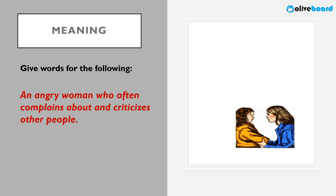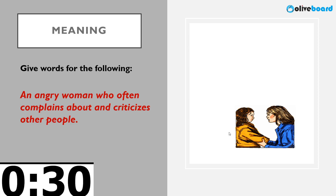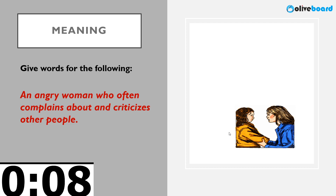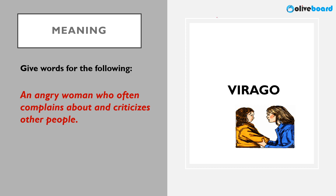Next: an angry woman who often complains and criticizes other people — a bad-tempered, violent, domineering woman always in a bad mood. The correct word is virago. Tempered is always related to mood — virago is a bad-tempered woman who is always criticizing others.